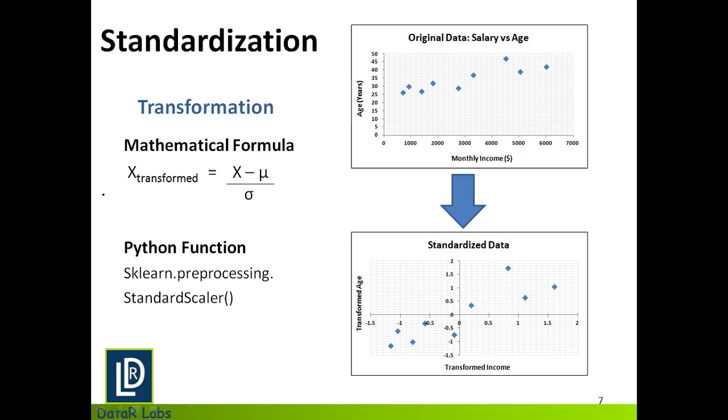Now what standardization does is, it is again on the same lines of normalization. Only thing which is different in this case is it's using a different algebraic formula to transform the variable. And the formula we have in front of us is this one instead of x minus x_min over x_max minus x_min. So what we have is x minus mu over sigma. Now what is mu and sigma? We have discussed this in one of our other videos. I'll put a link to that video in the description box. But for now, just understand what mu is. Mu is nothing but the mean of the entire variable and sigma is the standard deviation of the entire variable.